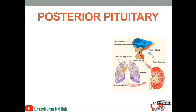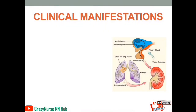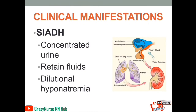Now let's proceed to another posterior pituitary disorder: syndrome of inappropriate antidiuretic hormone (SIADH). It occurs due to excessive ADH secretion from the pituitary gland, even in the face of subnormal serum osmolality. This is the opposite of diabetes insipidus — in this disorder, there is too much antidiuretic hormone. For the clinical manifestations of SIADH, we have concentrated urine. Since the patient retains fluid in the body, the urine becomes concentrated. And because fluid is retained, it dilutes the sodium electrolyte in the body, causing dilutional hyponatremia.